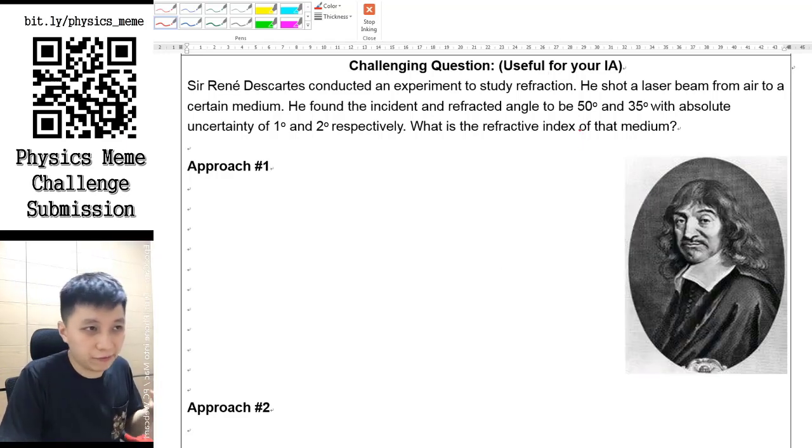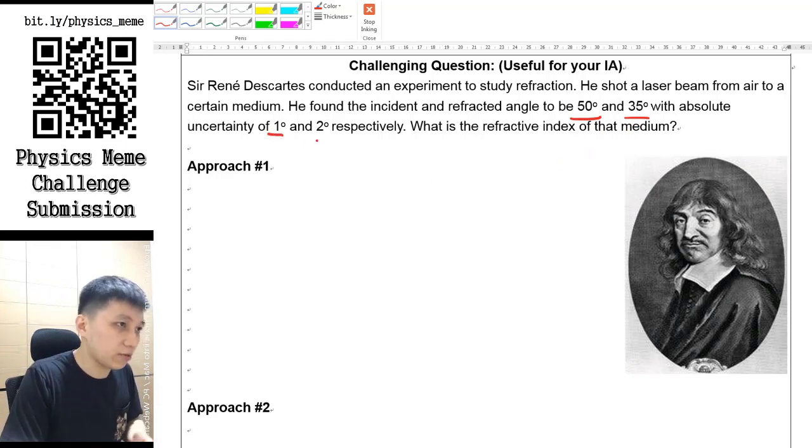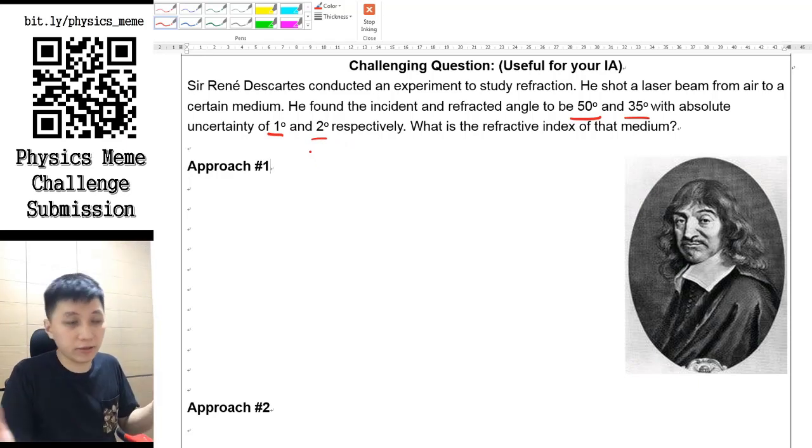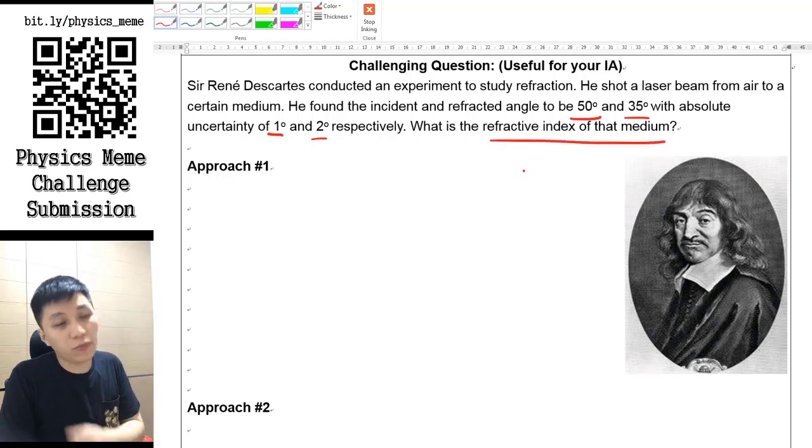What you do is you have the incident angle to be 50 degrees and you've also measured that the refracted angle is 35 degrees with the absolute uncertainty to be 1 degree and 2 degrees respectively for some reason.